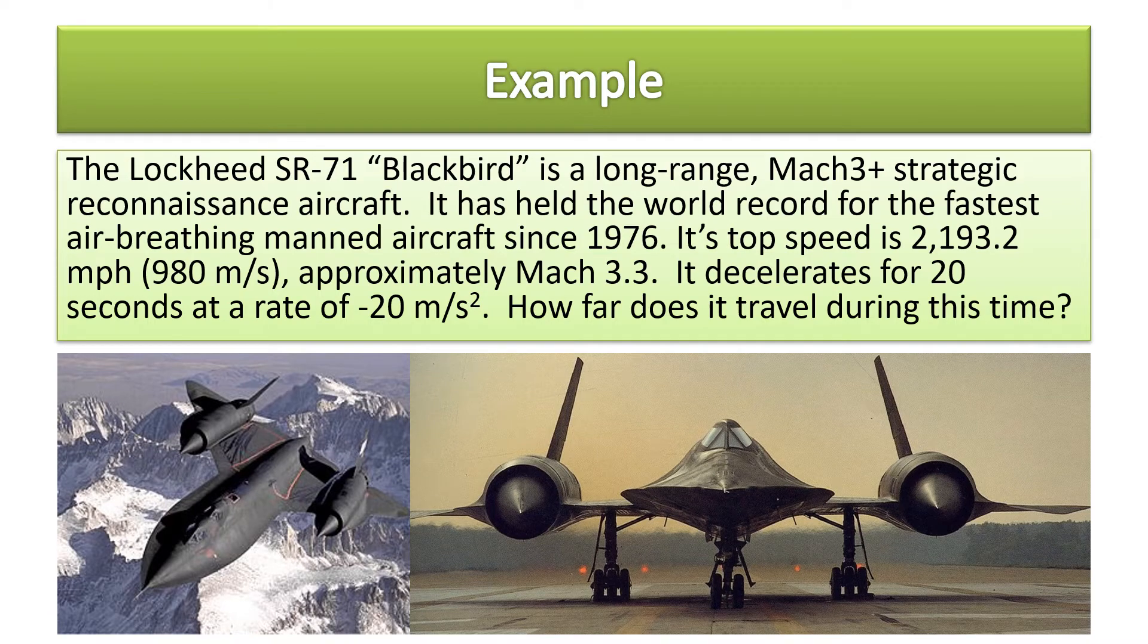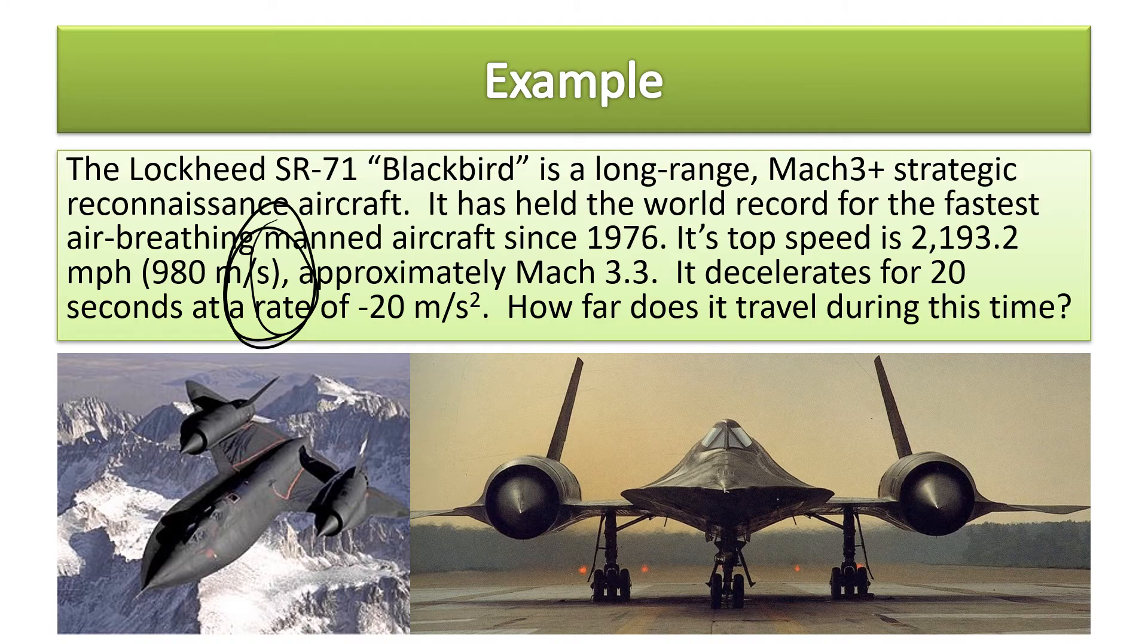Here's an example. The Lockheed SR-71 Blackbird is a long range Mach 3+ strategic reconnaissance aircraft. It has held the world record for the fastest air-breathing manned aircraft since 1976. Its top speed is 2,193.2 miles per hour or 980 meters per second, which is approximately Mach 3.3. Mach 1 is the speed of sound, Mach 2 is two times the speed of sound, so this thing goes 3.3 times the speed of sound. 980 meters every second—100 meters is about one football field, so 980 meters is almost 10 football fields in one second.